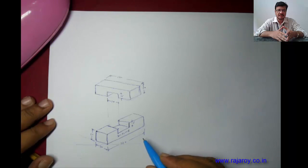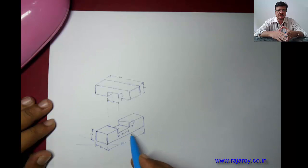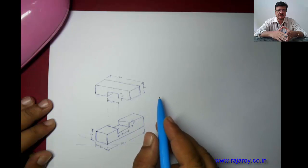In this tutorial, I will explain how to draw the isometric view of a half-lap joint. So this is the half-lap joint, this is the bottom part, this is the top part.